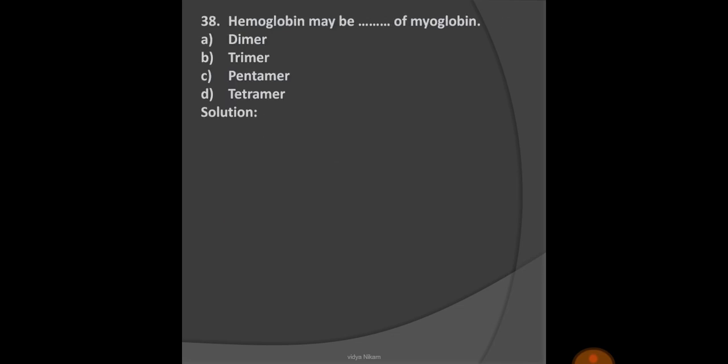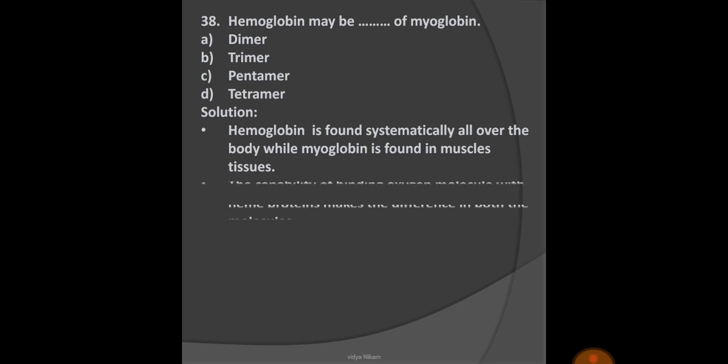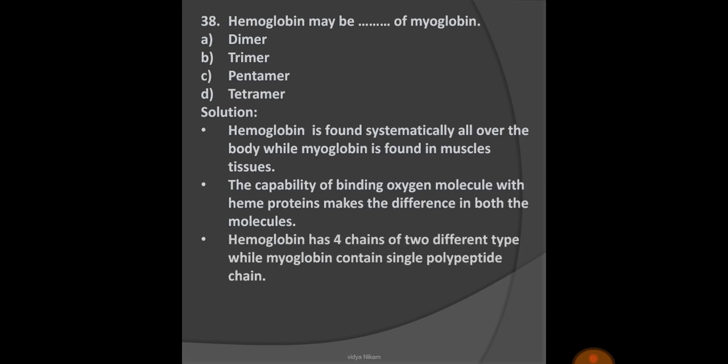Next question: Hemoglobin may be a what of myoglobin? Options: A) Dimer, B) Trimer, C) Pentamer, D) Tetramer. We know that hemoglobin is found systematically all over the body while myoglobin is found in muscle tissue. The capability of binding oxygen molecules with heme protein makes the difference in both molecules. Hemoglobin has four chains of two different types while myoglobin contains only a single polypeptide chain. Hemoglobin is called a tetrameric hemoprotein while myoglobin is called a monomeric protein. So hemoglobin is a tetramer of myoglobin. Option D is the right option.